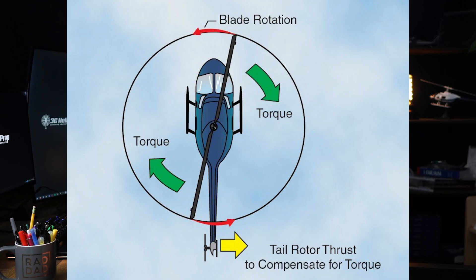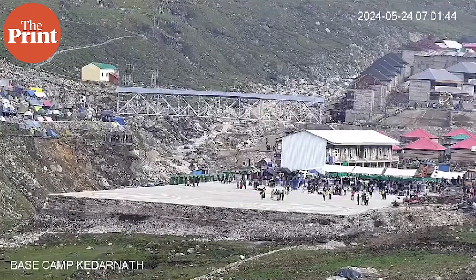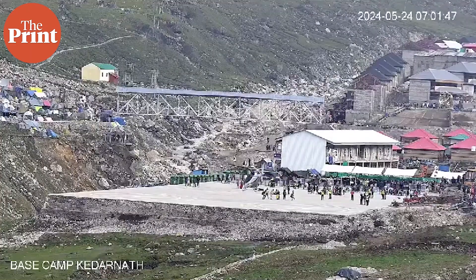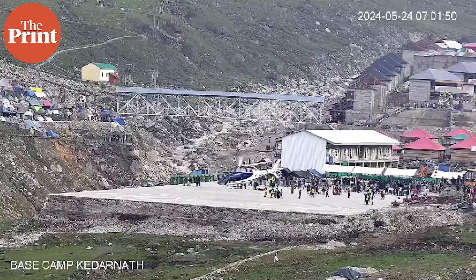For example, in many helicopters like the R-22 and R-44, the main rotor blades rotate counterclockwise when viewed from above. As a result, the fuselage tends to rotate clockwise to the right due to the reactionary force torque. Without a way to counteract this torque, the helicopter would uncontrollably spin in the direction opposite of the main rotor blades, making stable flight impossible.